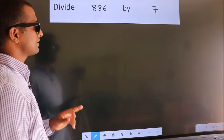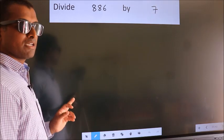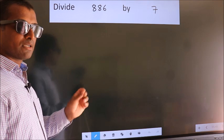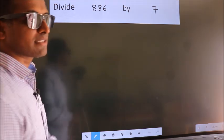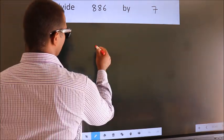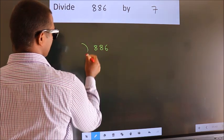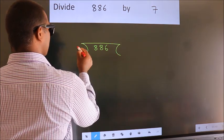Divide 886 by 7. To do this division, we should frame it in this way. 886 here, 7 here.